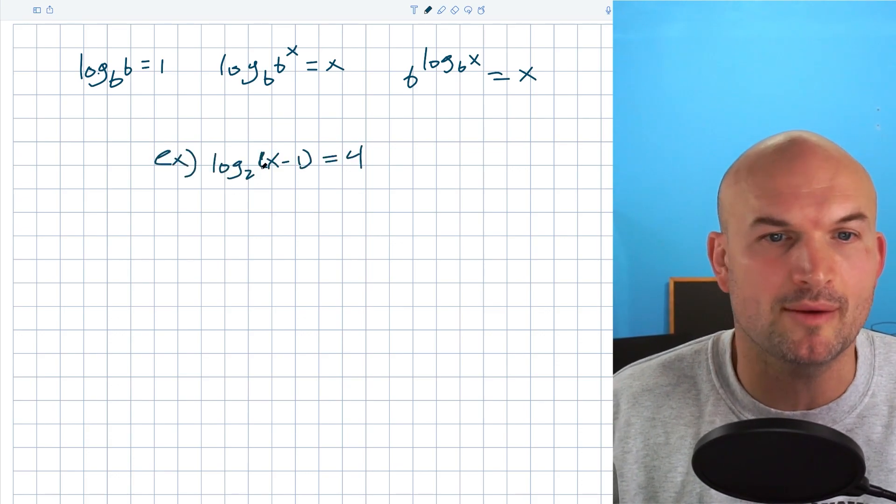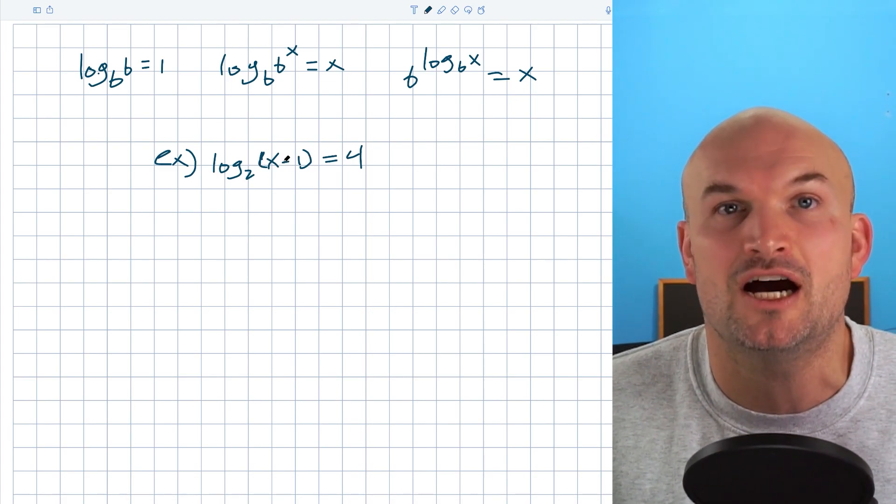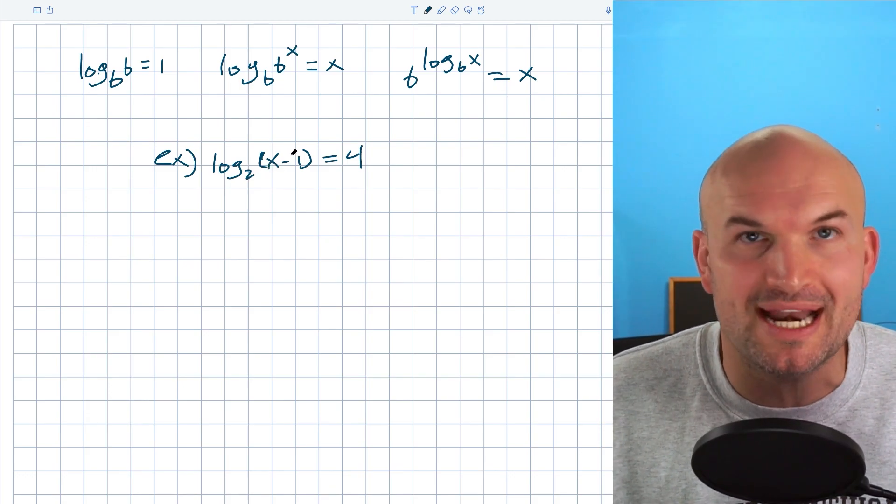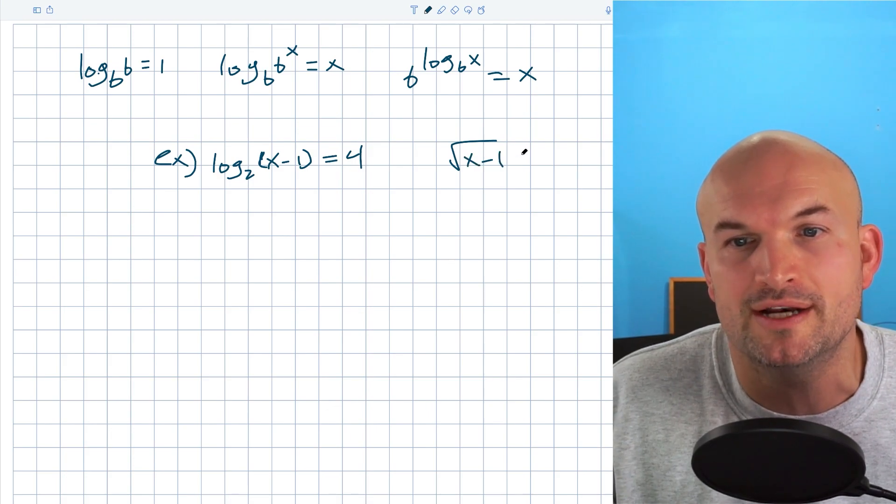So the main idea we have in this example is log base 2 of x minus 1 equals 4. We need to solve for x, but it's inside of the argument for our logarithm. So we have to undo the logarithm before we can actually solve for x. It's kind of like the same idea. If I had the square root of x minus 1 is equal to 4, I can't add the one over to the other side until I undo the square root.